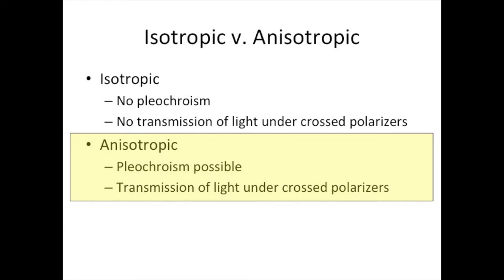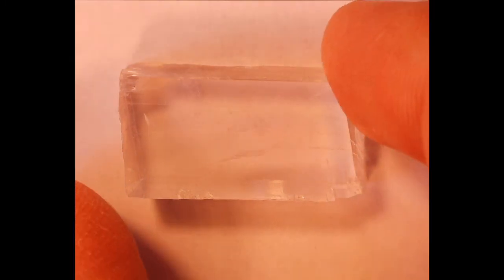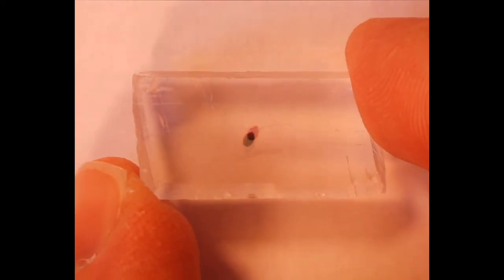Let's demonstrate how light interacts with anisotropic substances using the classic example of a calcite rhombohedron in normal everyday light. We're looking in a very specific direction in this calcite crystal — it is laying on one of its cleavage faces, specifically one of the faces that make up the 10̄11 crystal form. We're going to take a dot and look at it through the calcite rhombohedron, with no polariscope or fancy light sources involved.